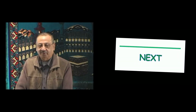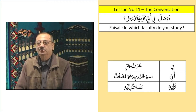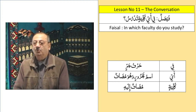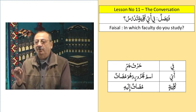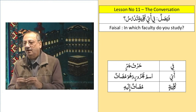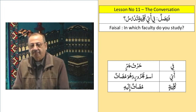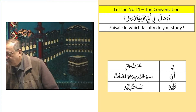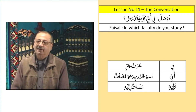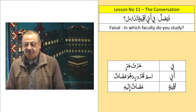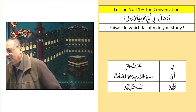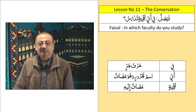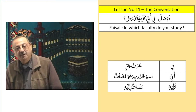Now look at this next sentence. Ayu has come, but before it there is a Harfjaar. So we say: 'Fi ayi kulliyatin' — three words in sequence. Fi is Harfjaar; Ayi is Ism Majroor and Mudaf; Kulliyatin is Mudafilihi. Remember, Ayu will always come as a Mudaf, so when Fi comes, Ayu becomes Ayi — Majroor — but it is still Mudaf with Mudafilihi after it.